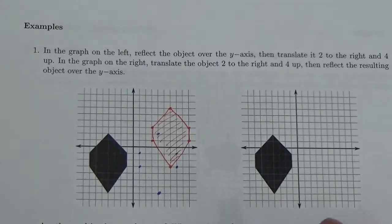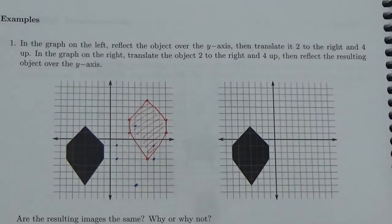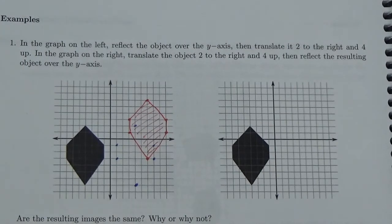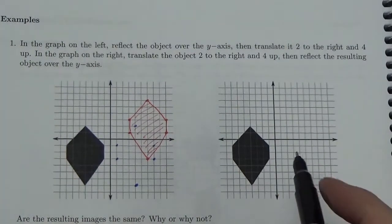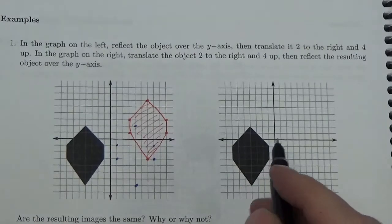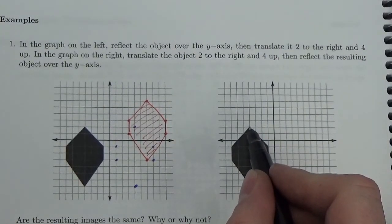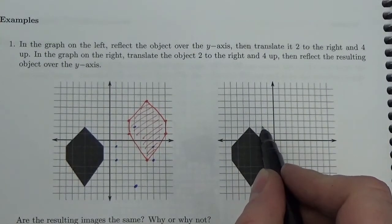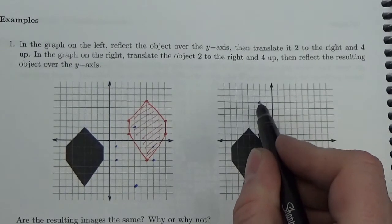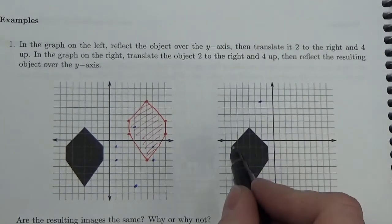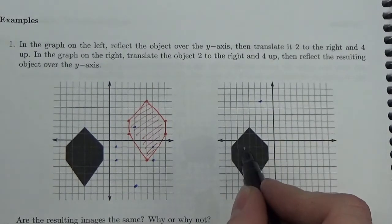Now let's go over here and do the second part. The second part says: in the graph on the right, take the object 2 to the right and 4 up, and then reflect it over the y-axis. So we're going to take each point 2 to the right and 4 up first.